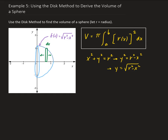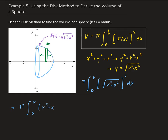We have our function, so now we can go ahead and set up our integral. We have pi times the integral going from zero to r of the square root of r squared minus x squared, squared. Squaring this gives us pi times the integral from zero to r of r squared minus x squared.